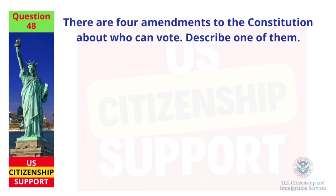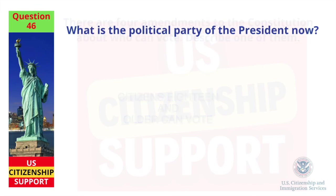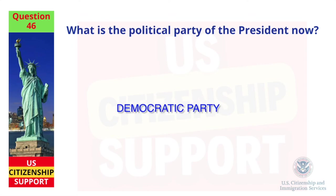There are four amendments to the Constitution about who can vote — describe one of them. Citizens 18 and older can vote. What is the political party of the president now? Democratic Party.